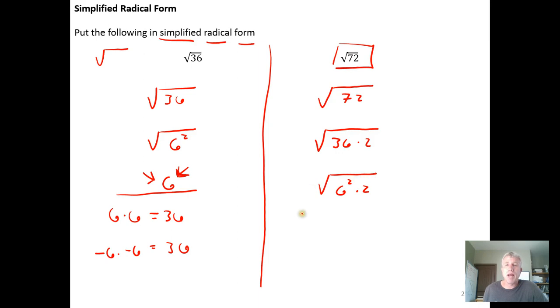In this case, the square root of 6 squared, or the square root of 36, is 6. I can simplify the part that is the perfect square, and the square root of 2—well, 2 isn't a perfect square, so we just leave the part that isn't the perfect square under the radical sign. This is the process of putting a radical into simplified radical form.